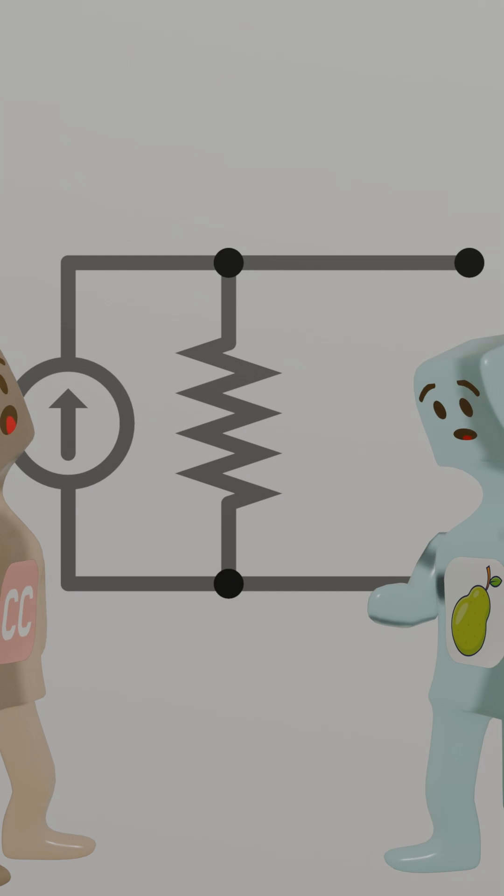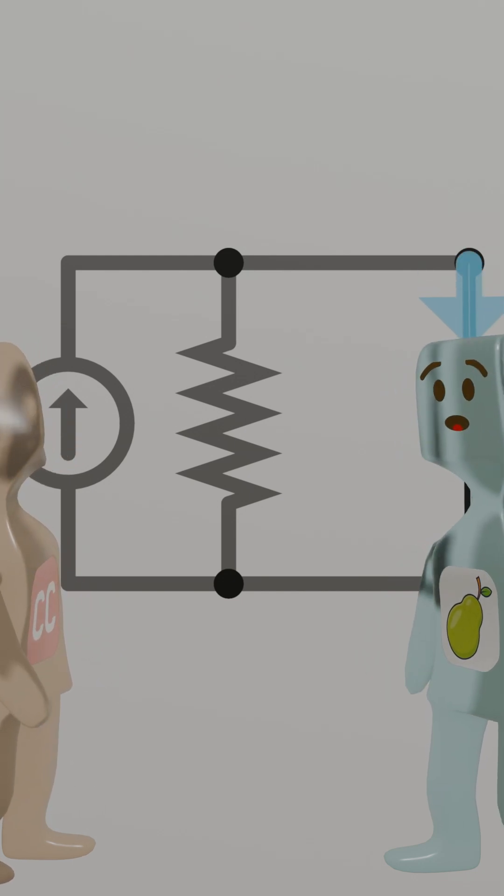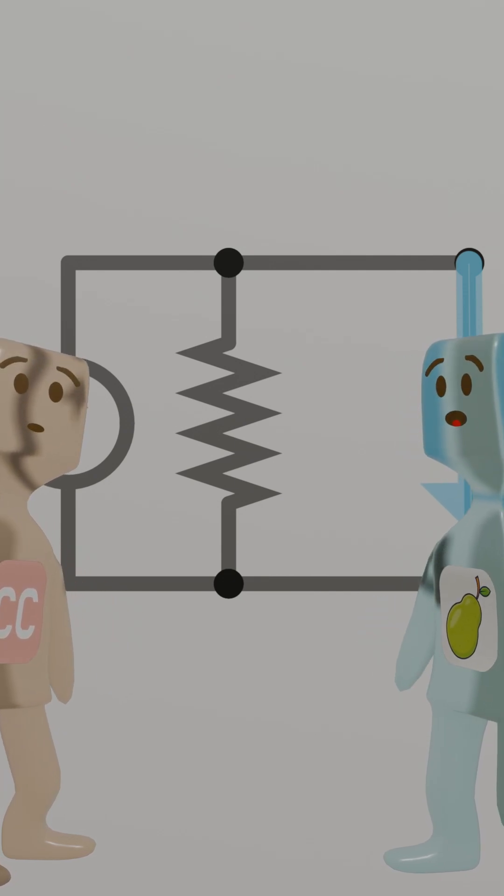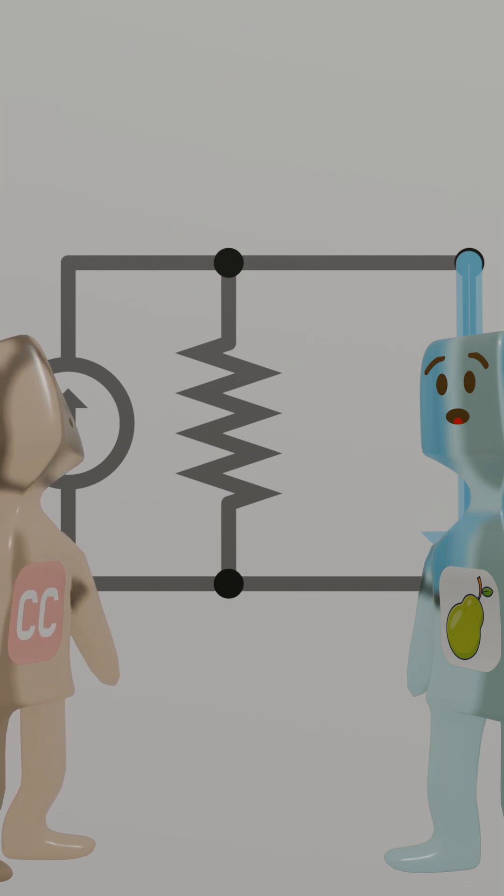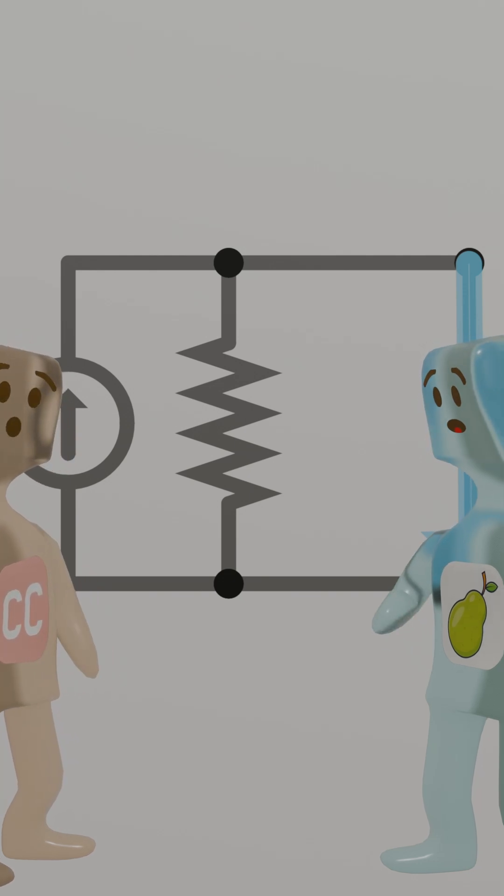Bingo. Oh, I get it. If I short the terminals, the resistance becomes zero. Current takes the path of least resistance. So the short-circuit current, I-S-C, is the Norton current, I-N. Norton is a genius!